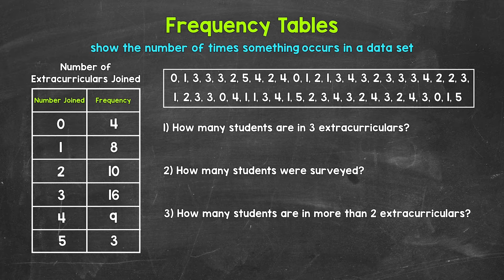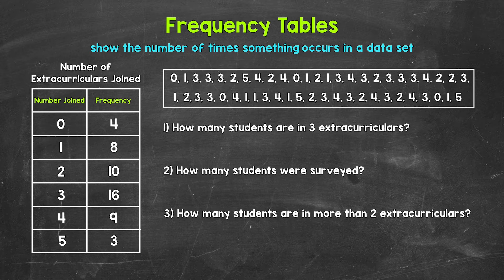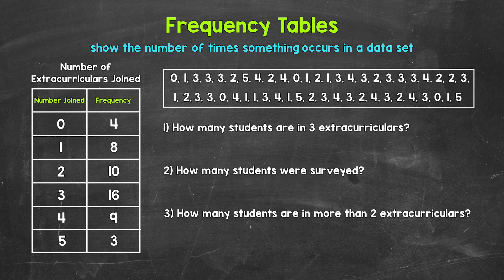Specifically, we will take a look at an example with ungrouped data — an ungrouped frequency table — as our first example, and then an example with grouped data, a grouped frequency table. Frequency tables are a way for us to represent and display data in an organized and easier to understand way. They show us the number of times something occurs in a dataset, whether that's a value, a range of values, or even something non-numerical. Whatever the case, we are looking at the frequency — the number of times something occurs.